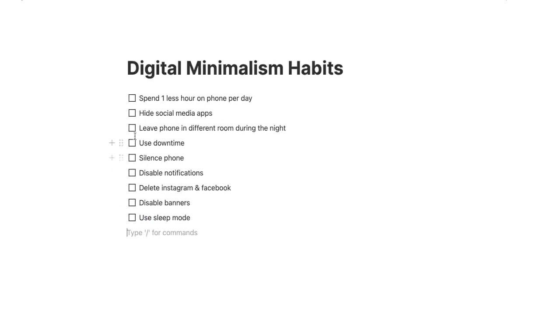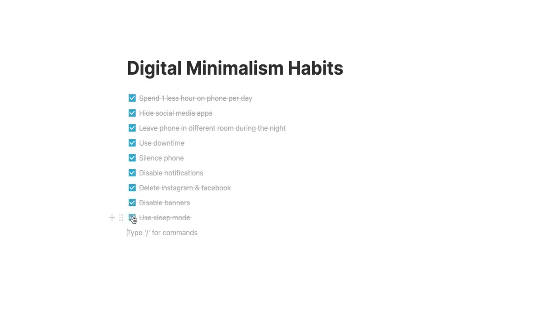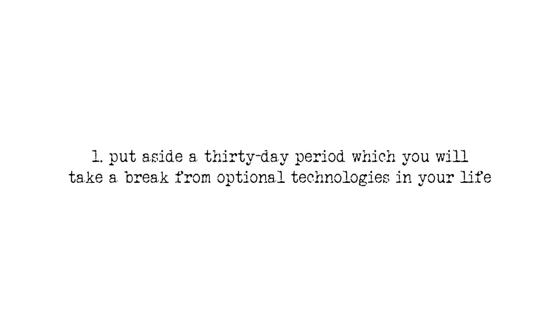Newport believes that gradually changing habits one at a time doesn't work well. Any attempt at optimizing technology use can prove fruitless if the basic principles and your philosophy of digital minimalism are not truly implemented. As such, the author suggests that you engage in a digital declutter process — a 30-day period in which you take a break from optional technologies in your life.